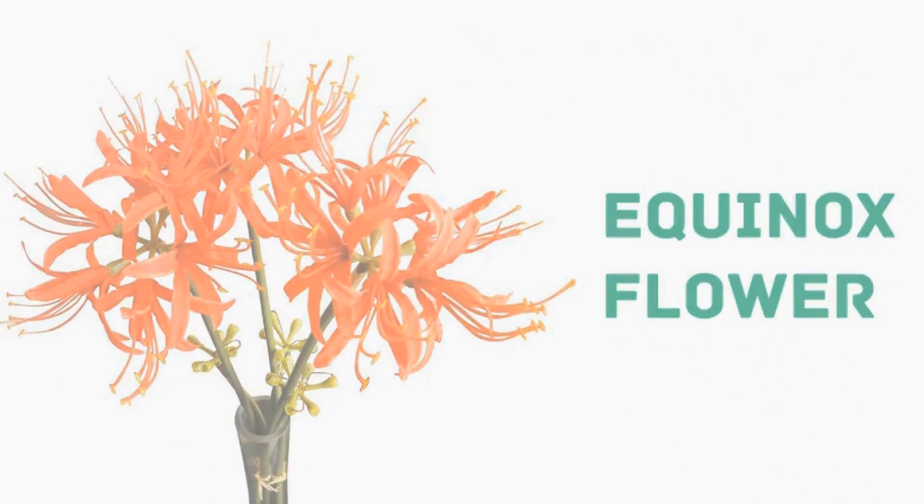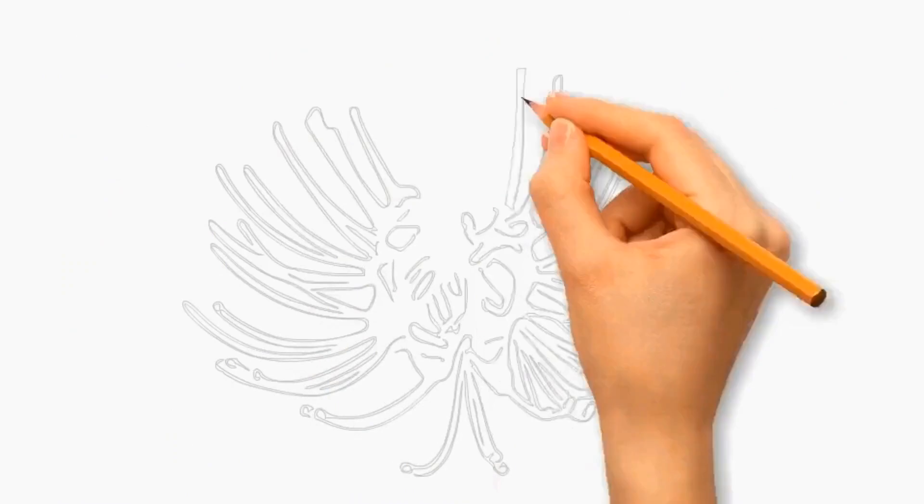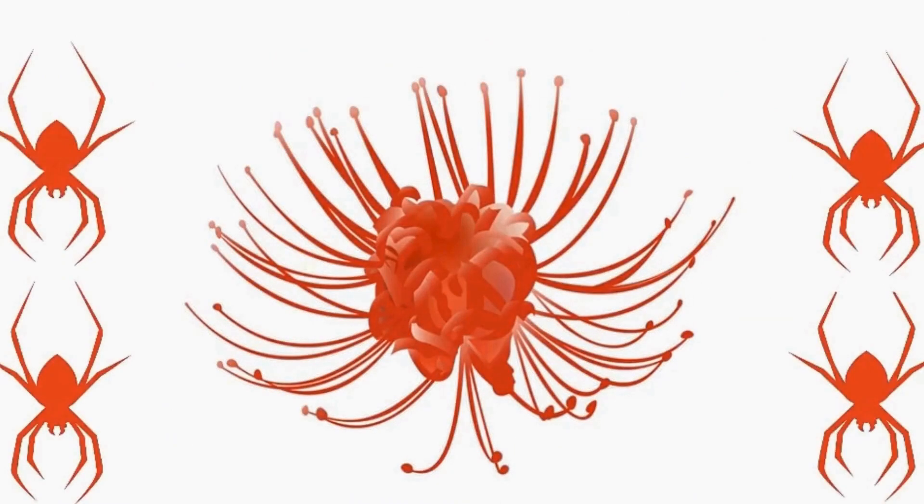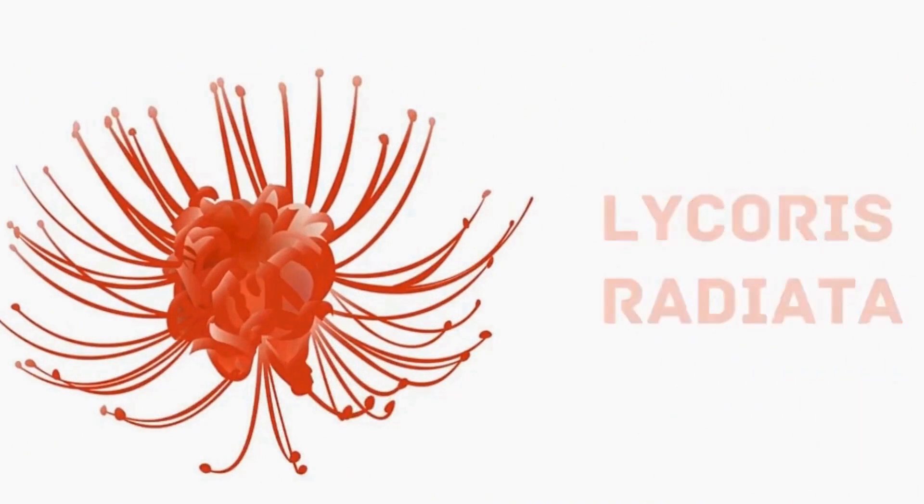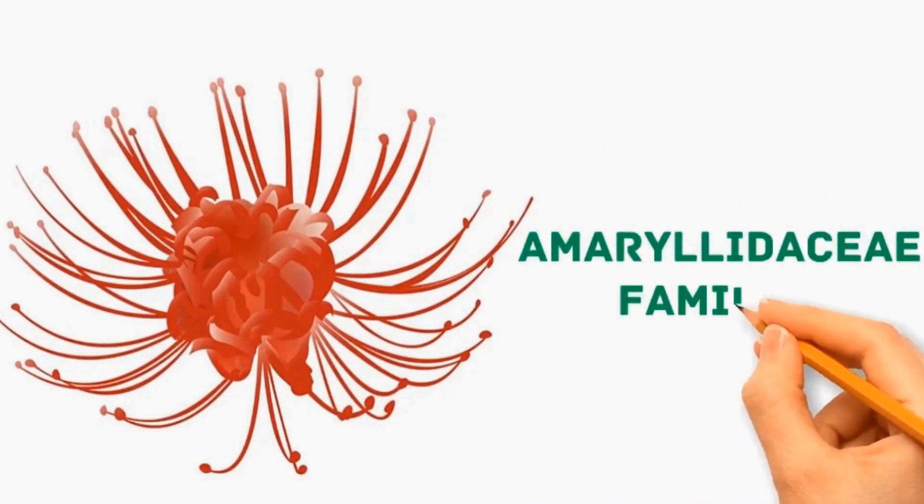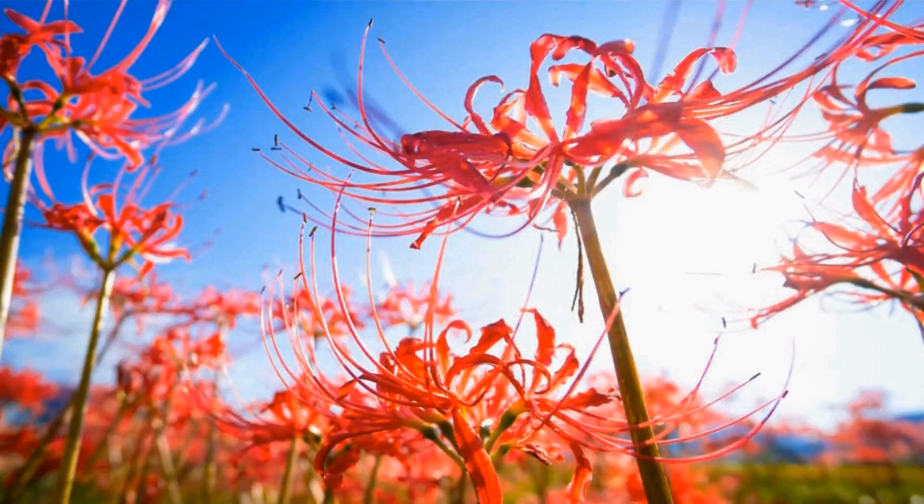It is called Red Spider Lily because each flower has long petals that look like spider legs. Its scientific name is Lycoris radiata, which belongs to Amaryllidaceae family. It is mostly found in shady, moist areas along slopes and rocky areas near stream banks.